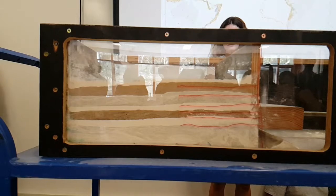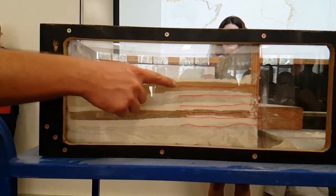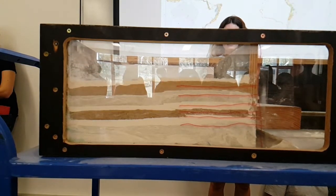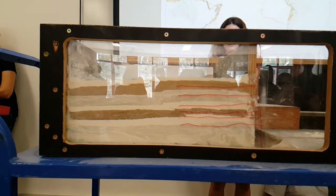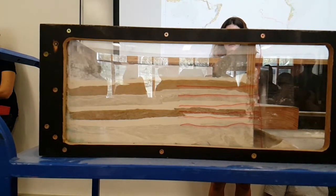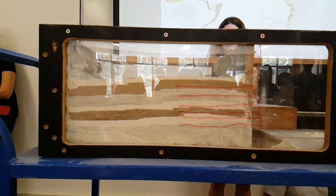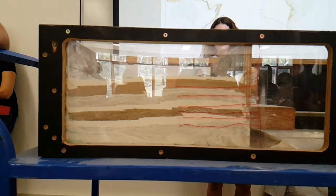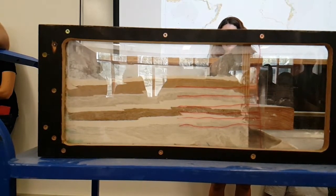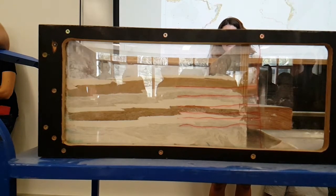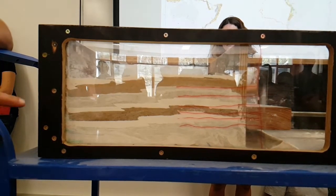As we start colliding these things, you can see that these layers are starting to thicken up. This is crustal thickening, something that occurs as we start colliding these things together.